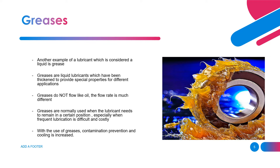Grease is another example of a lubricant which is considered a liquid. Greases are liquid lubricants that have been thickened to provide special properties for different applications. Greases don't flow like oil — they are very thick and normally stay in one position. They are used when the lubricant needs to remain in a certain position, especially when frequent lubrication is difficult and costly. With the use of greases, contamination prevention and cooling are improved.